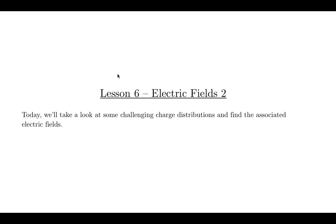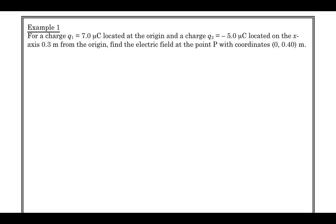which is our second lesson on electric fields, we're going to look at something a little bit more challenging. Basically, today's lesson is one example of a charge distribution that's a little bit more complicated. We have a charge Q1 of 7 microcoulombs located at the origin, and a charge Q2 of minus 5 microcoulombs located on the x-axis 0.3 meters from the origin.